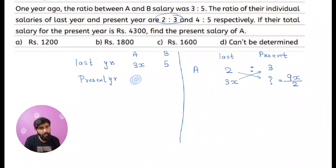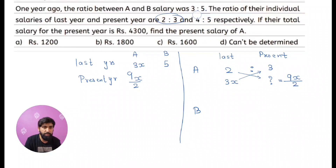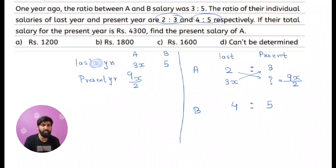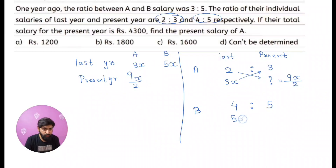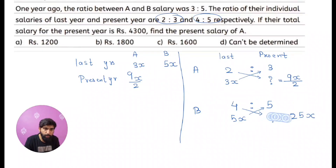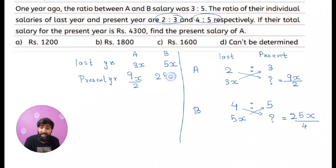Similarly for B, the salary ratio from last year to present year is 4:5. Since the last year salary of A was 3x, the last year salary of B will be 5x. So B's present year salary is: 5x × 5 = 25x, divided by 4. The present year salary of B is 25x/4.